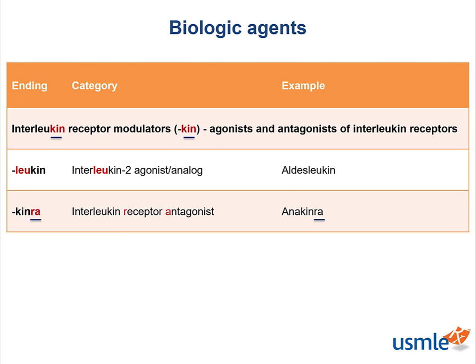Anakinra, for example, ends in 'RA', which can help you remember R for receptor and A for antagonist. Those that are agonists and similar to interleukins will also have 'leukin' in the name, like aldesleukin.